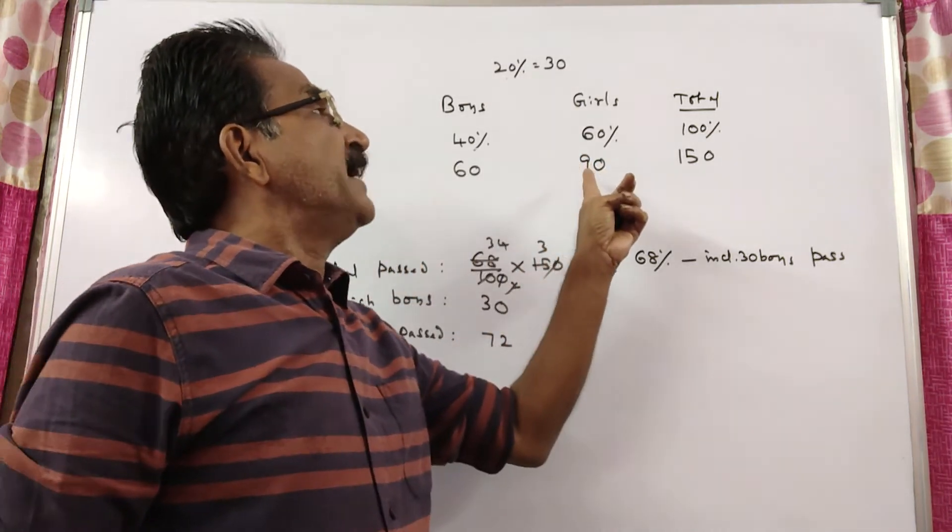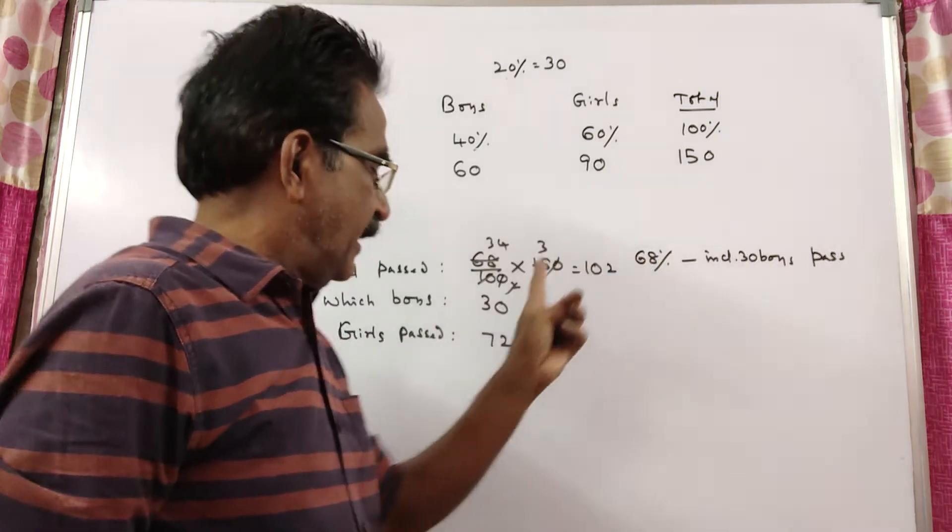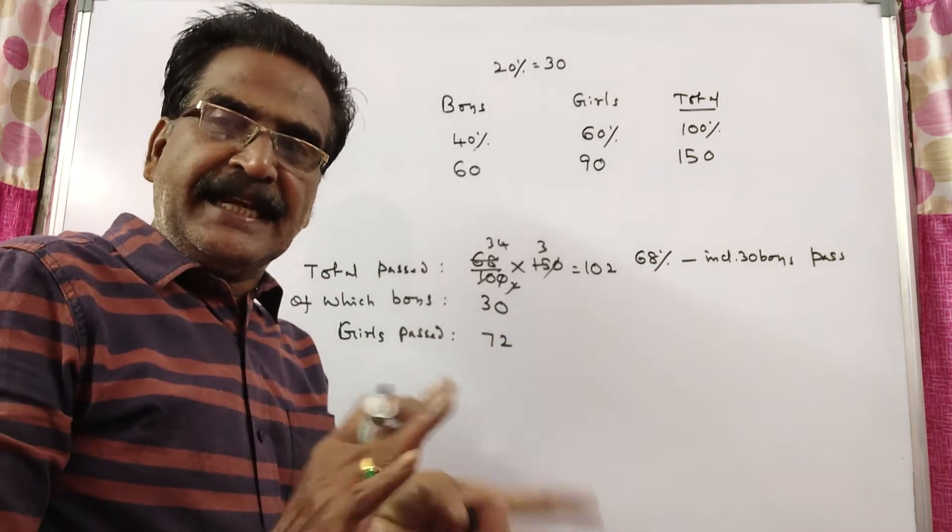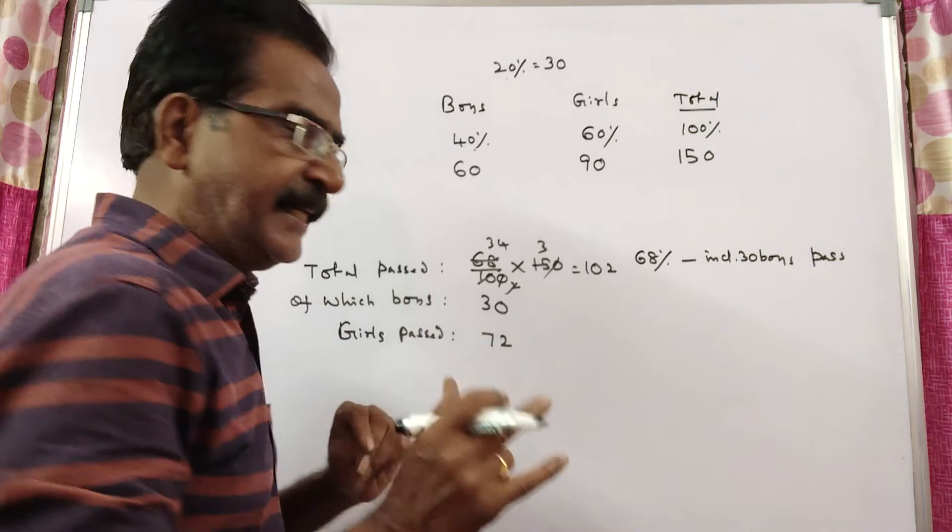So out of 90 girls, 72 girls passed. That means 90 minus 72, 18 failed.